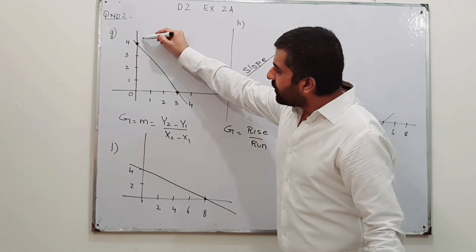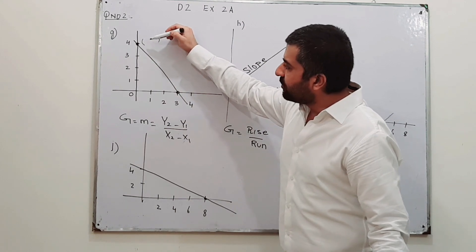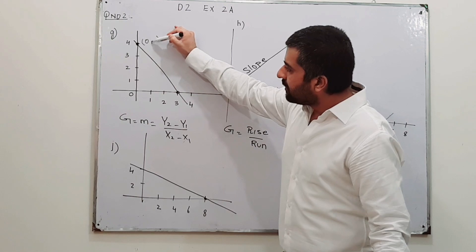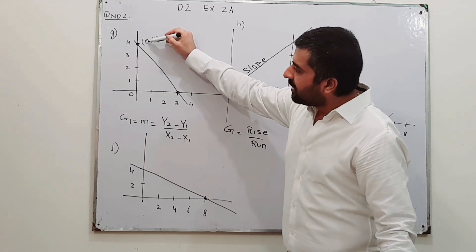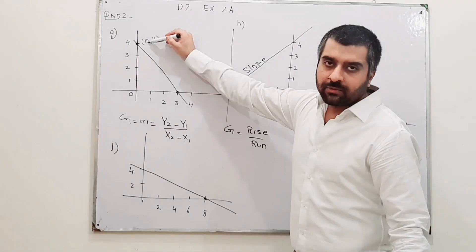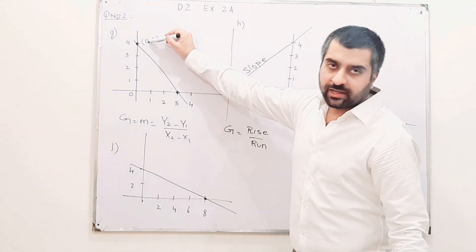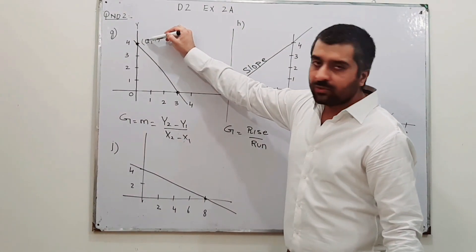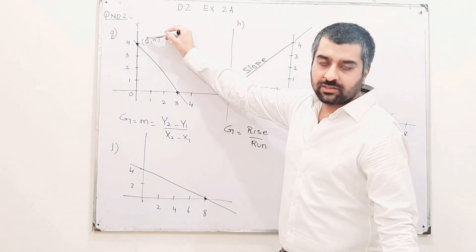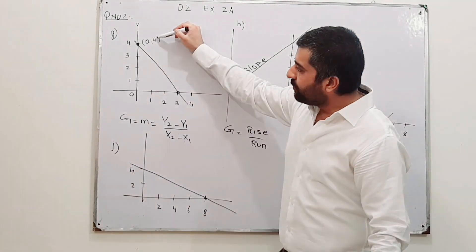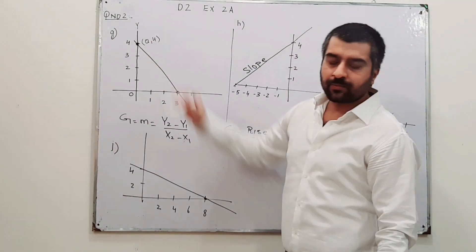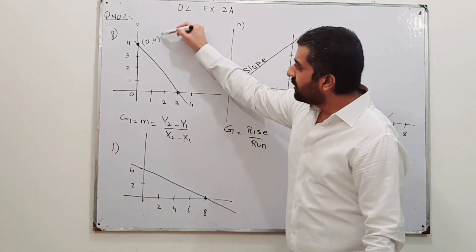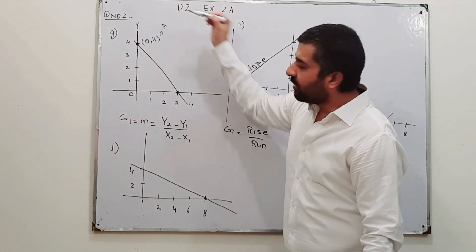The coordinates of this first point, as you can see, are 0 and 4. This is 0 because we are on the y-axis. On the y-axis, the value for x is 0, while the value for y is 4. This is point A.